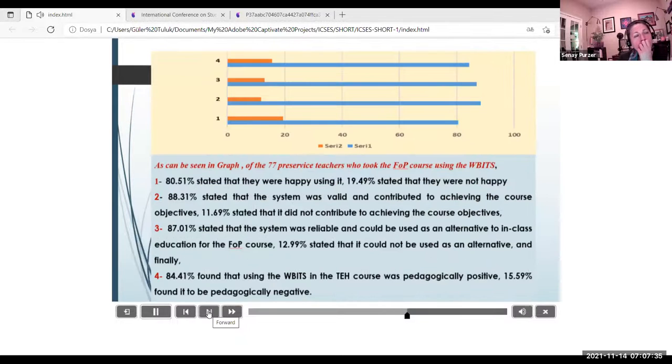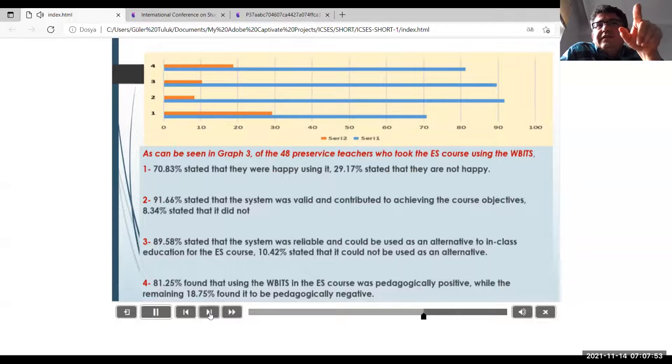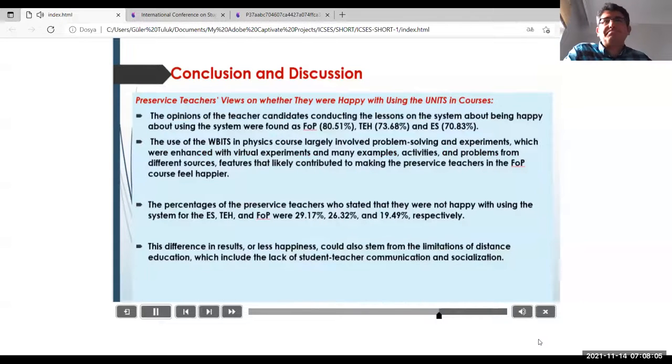As can be seen in graph, of the 77 preservice teachers who took the FOP course using the WBITS, 80.51% stated that they were happy using it. 19.49% stated that they were not happy. In graph 3, of the 48 preservice teachers who took the S course using the WBITS, 70.83% stated that they were happy using it. The percentages of preservice teachers in courses on the system about being happy about using the system were found as FOP, 80.51%.